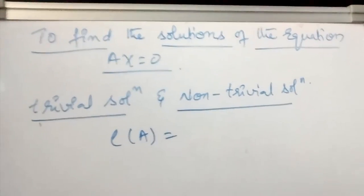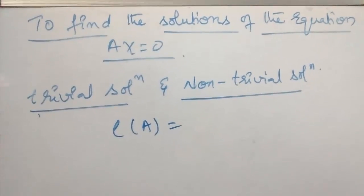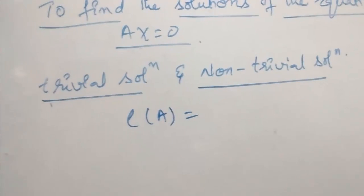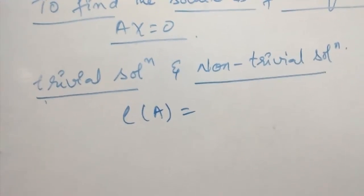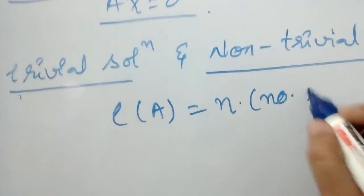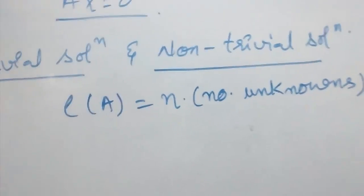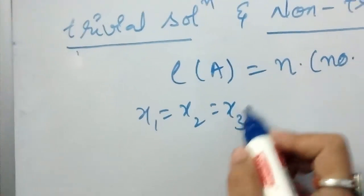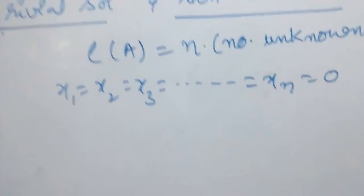We are going to find the solution of an equation when it is a homogeneous equation. A homogeneous equation means the given equation AX equals 0. In that case, we are going to get either a trivial solution or a non-trivial solution. Trivial solution means when the rank of A equals the number of unknowns — that is, x1 equals x2 equals x3 equals ... equals xn equals 0.